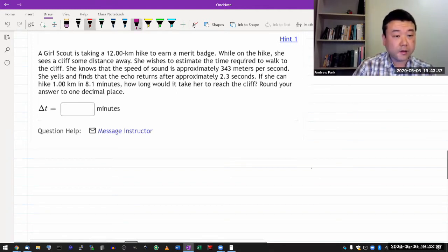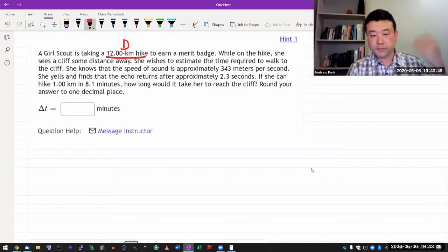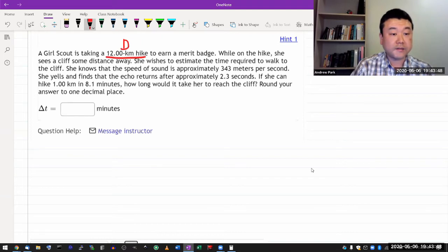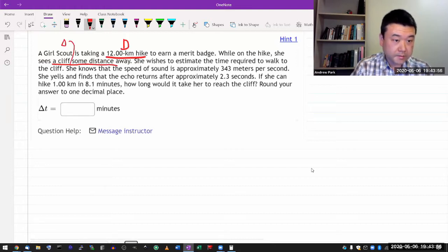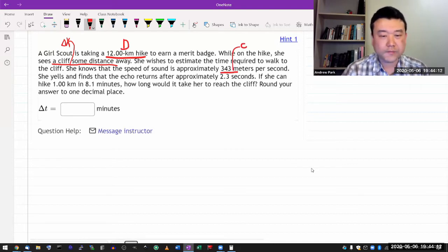So let me do this one. It says a Girl Scout is taking a long hike. Let me just give it a distance D to earn some merit badge. While on the hike she sees some cliffs some distance away. So that's a different distance, cliffs some distance away. Let me call that delta X. She wishes to estimate the time required to walk to the cliff. She knows that the speed of sound is approximately that. Let me give that speed C because I'm going to use V for something else. 343 meters per second.